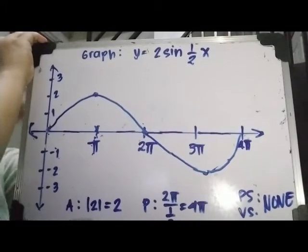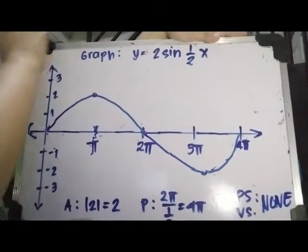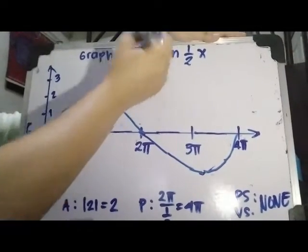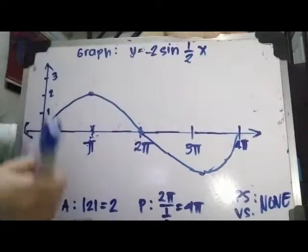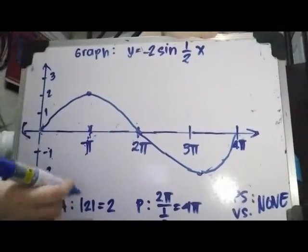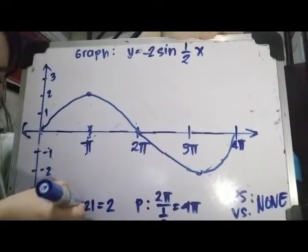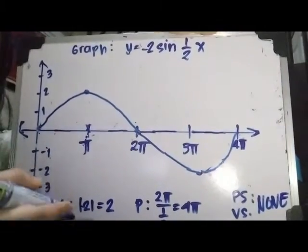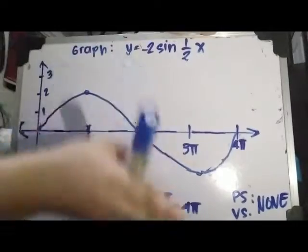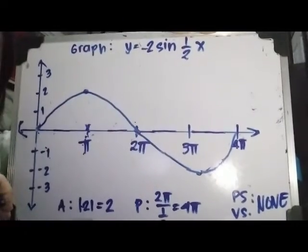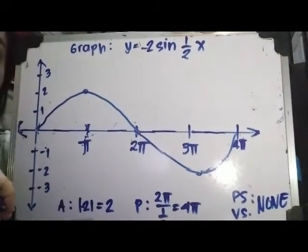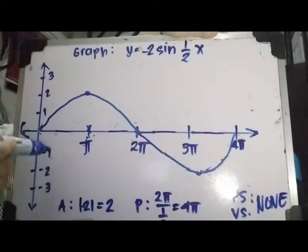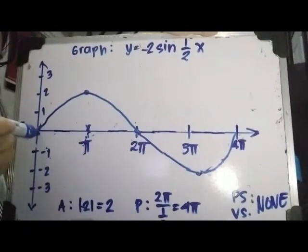What if there is a negative sign before the 2? Our amplitude is the absolute value of negative 2, so it's still 2. But of course, our graph will flip over the x-axis, so it's going to look like this.